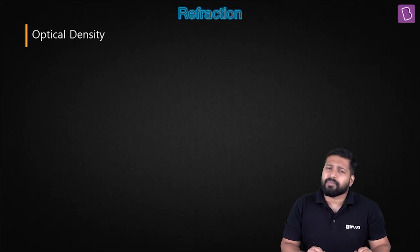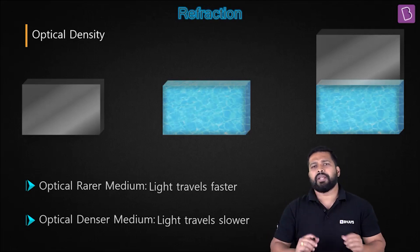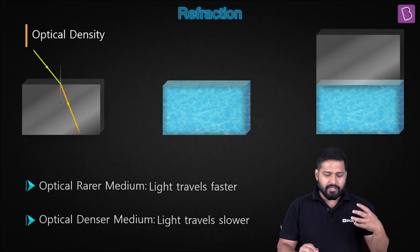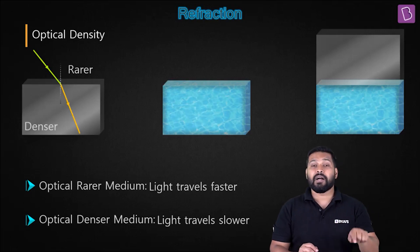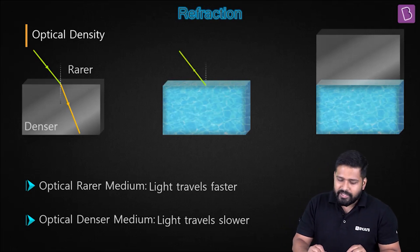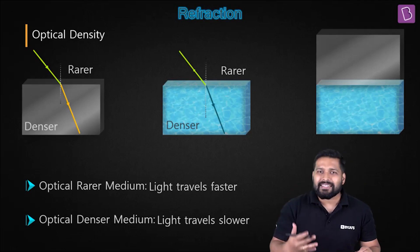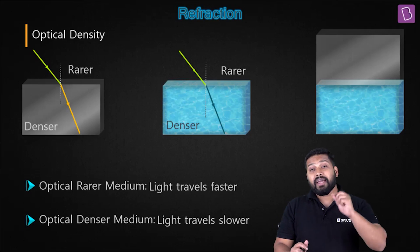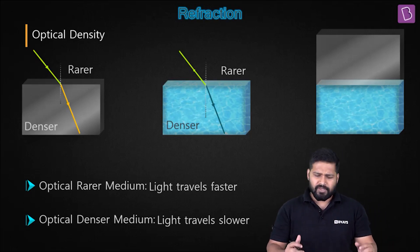Let's take some examples. Say I have a glass slab, another container having water, and then a third condition where I put one above the other. When the light ray comes from air into glass, you can see there is a bending and the light slows down — the velocity of light in glass is less, which means glass is an optically denser medium compared to air. Similarly, when light comes from air into water, the speed of light is less in water compared to air, which means air is optically rarer and water is optically denser.